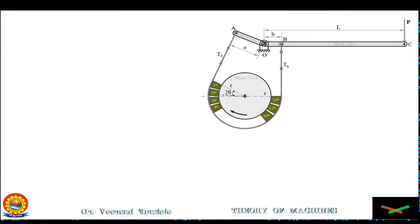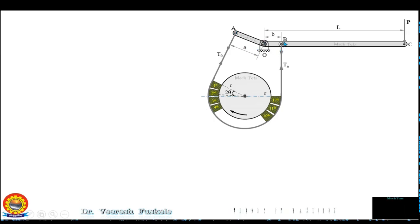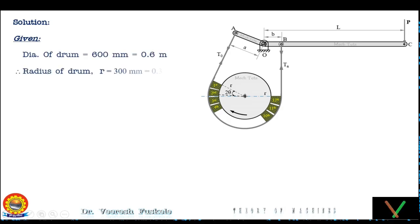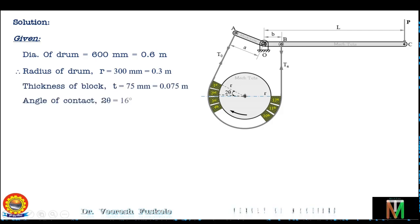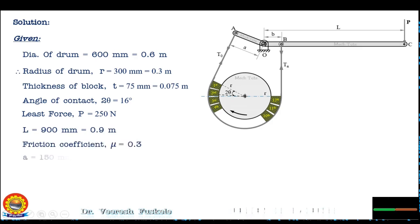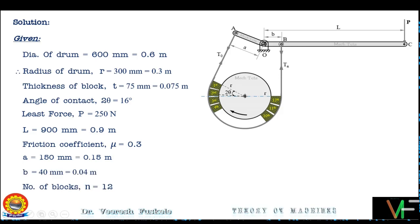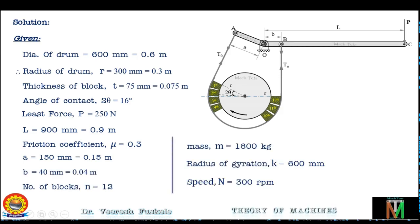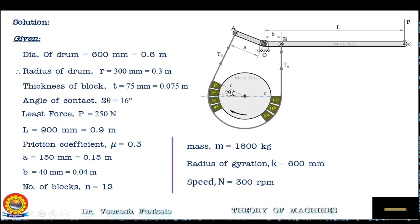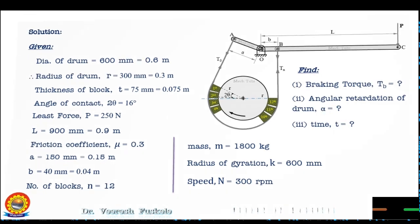If a force of 250 N is applied on the lever at a distance of 900 mm from the fulcrum, find: (1) the maximum braking torque, (2) the angular retardation of the drum, and (3) the time taken by the system to become stationary from the rated speed of 300 rpm. The coefficient of friction between the blocks and drum is 0.3. Given: diameter 600 mm (radius 0.3 m), block thickness T = 0.075 m, 2-theta = 16°, P = 250 N, L = 0.9 m, mu = 0.3, A = 0.15 m, B = 0.04 m, N = 12 blocks, mass = 1800 kg, radius of gyration K = 600 mm, speed = 300 rpm.